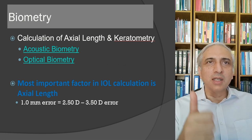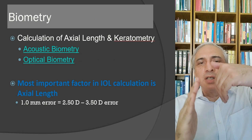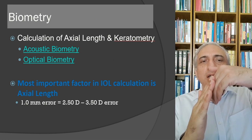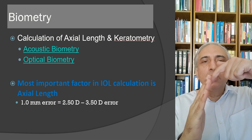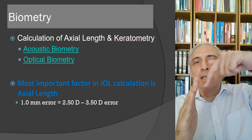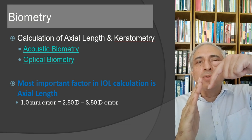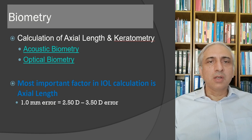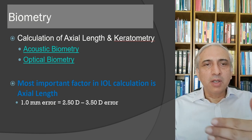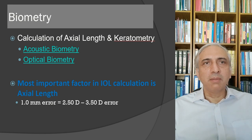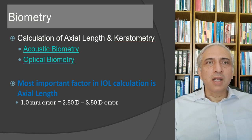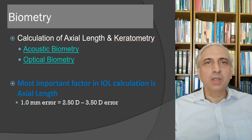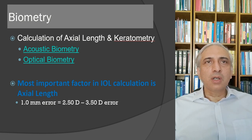Axial length and keratometry can be measured by two methods: acoustic (contact) and optical (non-contact). In acoustic biometry, the probe is pressed onto the corneal surface and sound waves travel to the internal limiting membrane and back. In optical biometry, readings are slightly higher as light penetrates deeper into the retinal layers.